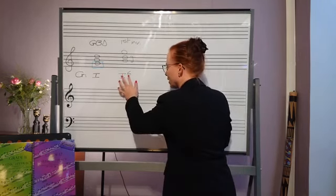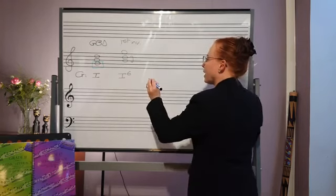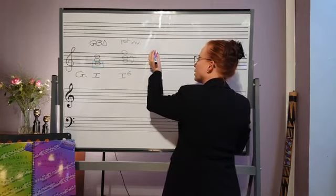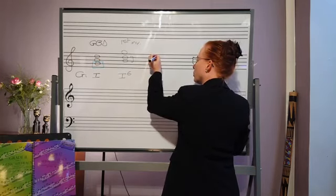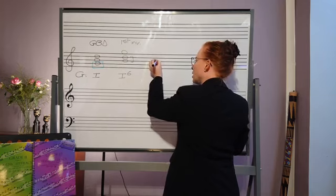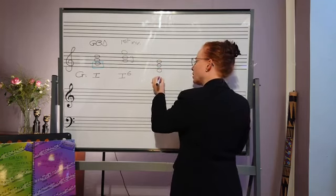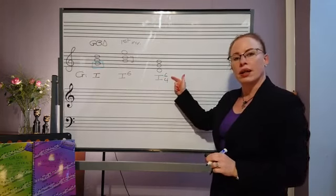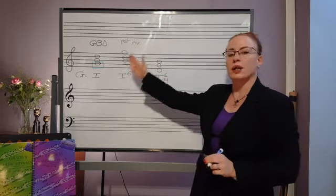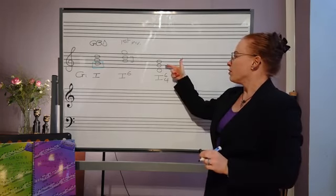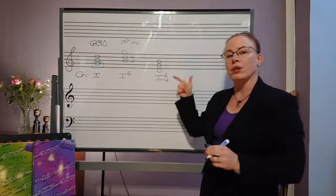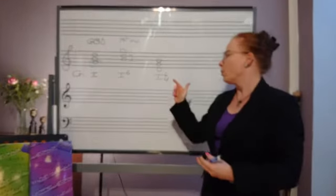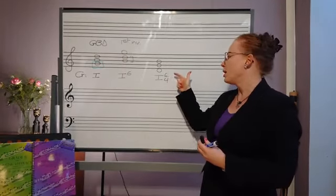And then if we put the fifth of the triad in the bass, so you've got, say for example, G-B-D, we say it's in second inversion and we figure it like this. And based on what I just told you, we've got the interval of a fourth and we've got the interval of a sixth. And especially for you guys if you're going to study music, we always write the highest number at the top and then the lowest number, in that order, so from the highest to the lowest.